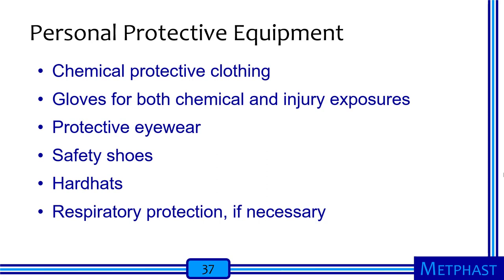Personal protective equipment typically includes chemical protective clothing, gloves for both chemical and injury exposures — as there are many injury risks in waste handling — protective eyewear including goggles and safety glasses, safety shoes, hard hats, and when necessary, respiratory protection, particularly for those exposed to dust containing unknown materials. Metals at low concentrations could be very risky, and there is also potential for exposure to dioxins, furans, and very hazardous compounds, especially for incinerator workers performing cleaning and maintenance operations.